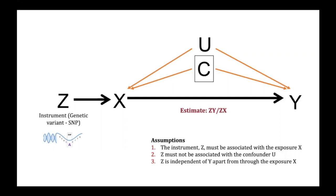Two, the instrument must not be associated with confounding factors, indicated by the lack of arrow between Z to C and U, which again because of Mendel's laws of independent assortment and randomization at conception, we're more likely to meet this assumption.